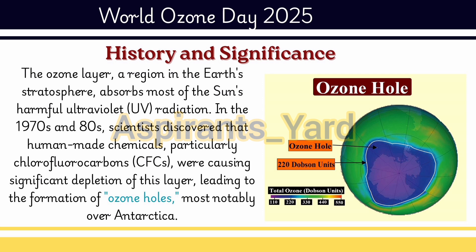The ozone layer, which is a region in the Earth's stratosphere, absorbs most of the sun's harmful ultraviolet rays, also abbreviated as UV rays. In the 1970s and 80s, scientists discovered that human-made chemicals, particularly the chlorofluorocarbons (CFCs), were causing significant depletion of this layer, leading to the formation of ozone holes, mostly observed in the regions over Antarctica.